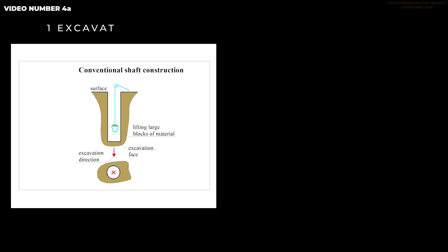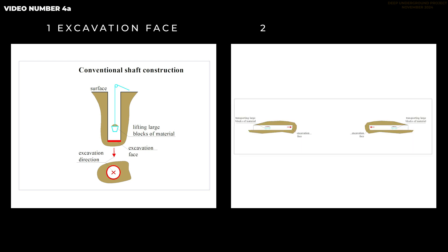There can only be one excavation face in the case of a shaft, and usually two in the case of tunnels — for example, tunnel faces on each side of a hill. An excavation face always remains the same.